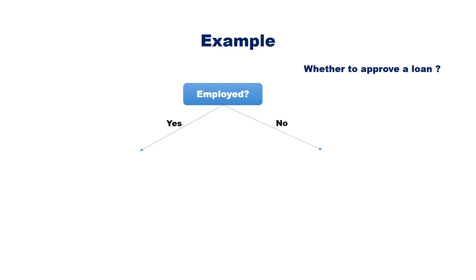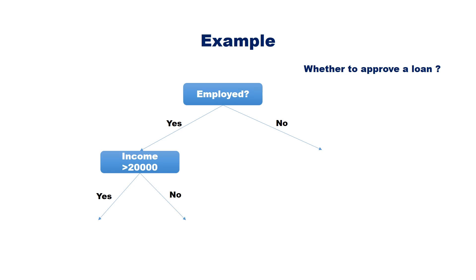If the person is employed, we can check his income level. The next node may be whether income is greater than 20,000. Again, this decision has two outcomes, yes or no, so this node also has two branches. If the income is greater than 20,000, approve the application; otherwise reject the application.